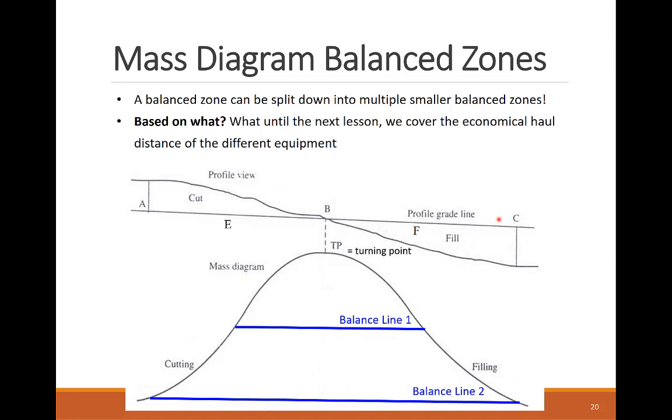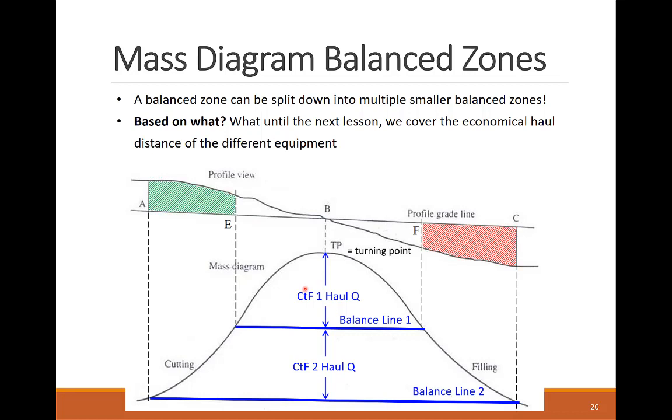On the screen, we created two balanced CTF operations by drawing two balance lines through the mass diagram. The haul quantity of each CTF operation equals the mass ordinate delta contained between the mass diagram and the relevant balance lines. For the first CTF operation, the haul quantity is between the mass coordinates at point B and the points of the first balance line, points E and F. The quantity of the second CTF operation is the mass ordinate difference between the mass diagram intersects of the two balance lines. The first haul quantity is cut from segment EB, hauled and then filled in segment BF. The second haul quantity is cut from segment AE, hauled for a longer distance and filled in segment FC.